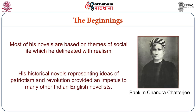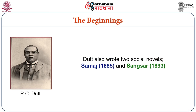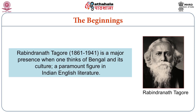R. C. Dutt wrote six novels in Bengali. Four of his historical novels are Conqueror of Bengal, Bracelet of Flowers, Evening of Rajput Life and Dawn of Maharashtra. Dutt also wrote two social novels, Samaj and Sangsar. The first deals with the issue of widow remarriage and the second deals with the issue of inter-caste marriage. Rabindranath Tagore is the most prolific writer in Indian writing in English.